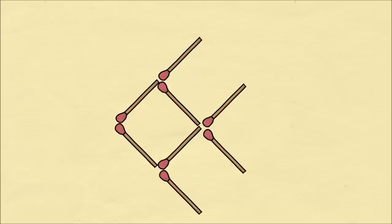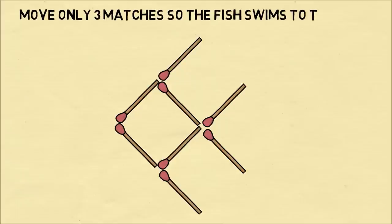In the first puzzle, we had the shape of a fish, and we wanted to move three of the matches so that the fish was looking in the other direction, or the fish was swimming to the right.